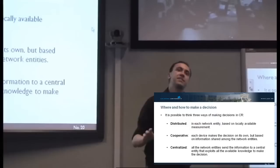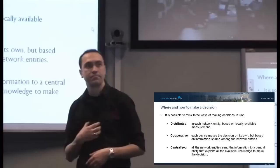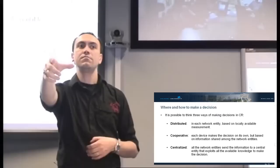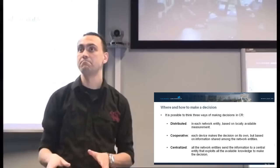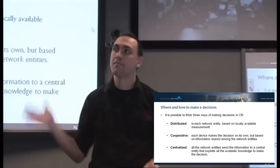We can have three types of decision. Distributed, I take what I have, I decide. Cooperative, I take what I have, you take what you have, either we decide and we share our decisions, or we share the information and then we make a decision together. Or centralized, you guys give me what you have and I decide. So these are the three main classifications that we have.